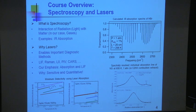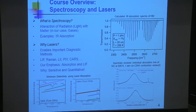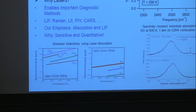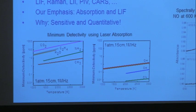Why else do we care about lasers? They allow very sensitive and quantitative probing. Here's a plot of detection limit in parts per million versus temperature for a variety of molecules. For the prescribed temperature, pressure, path length, and time response of one megahertz, we can detect sub-part-per-million of some diatomic molecules, and typically tens to maybe 100 parts per million of larger molecules. It's a very sensitive way of detecting species.